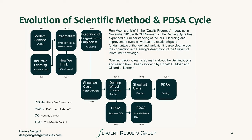Deming, however, took it forward and continued to refer to it as the Shewhart cycle, and ultimately in the early 1990s started to describe it as the PDSA — the Plan, Do, Study, Act cycle.